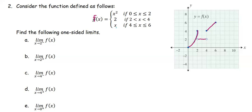We are going to find the following one-sided limits. For part A, we find the limit of f of x as x approaches 2 from the left. That means we are going to look at the graph as x comes to the number 2 from the left side. For x approaching 2 from the left, the graph goes with the first piece defined as x squared. Coming from the left, the graph is approaching the y value of 4.